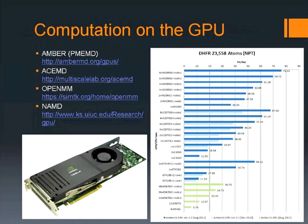I want to talk about computation on the GPU. Right now there are a number of codes that run GPU-accelerated molecular dynamics. One that's missing off this list is the LAMMPS code, which is maturing right now. But essentially there's AMBER, which is what I work on; a code called ASMD out of Imperial College in London; OpenMM out of BJ Pande's group at Stanford; and NAMD out of Klaus Schulten's group at UIUC. Obviously I'm going to focus on AMBER here given that's what we're working on.